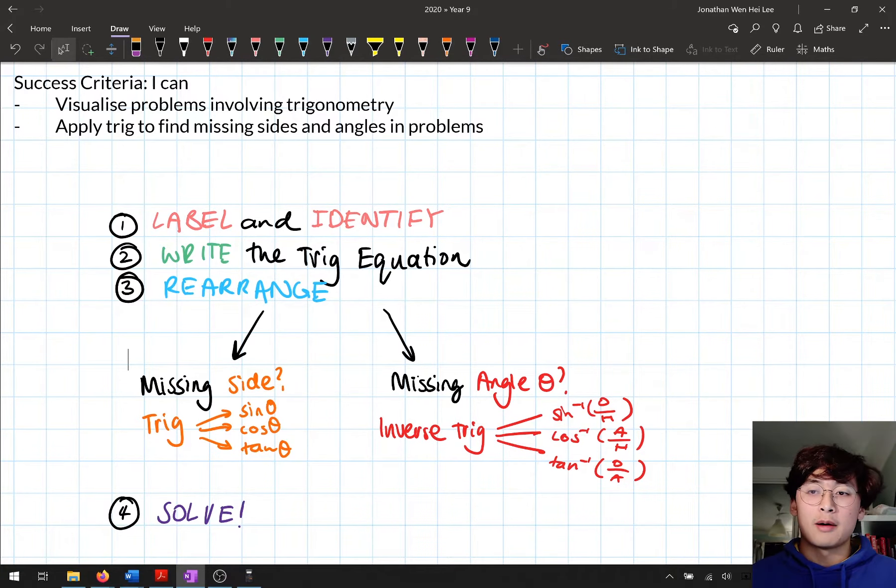The second step in Newman's analysis is to ask yourself what is the question asking you to do. Are you trying to find an angle, a side, a height? What are you trying to find in the question? Make sure you're very clear in your mind what you are trying to find, and that your goal is to find that thing and not some other quantity in your question.